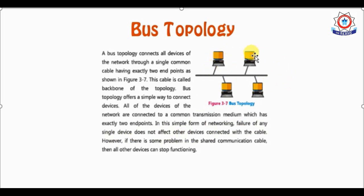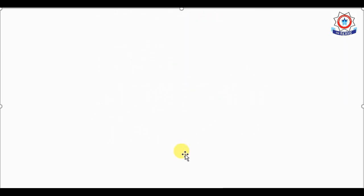If one device fails, it will not have any effect on the others — that is an advantage. However, if there is a problem in the shared communication cable, then all other devices can stop functioning. If the main cable fails, it will affect all devices connected to it — that is a disadvantage of bus topology.